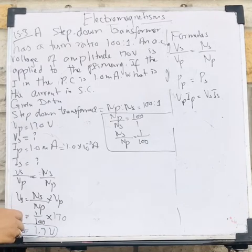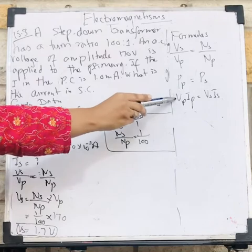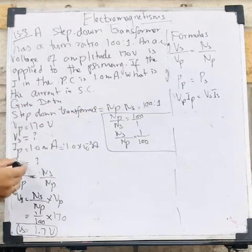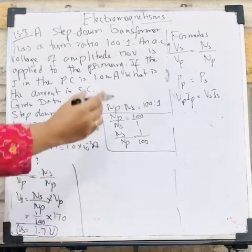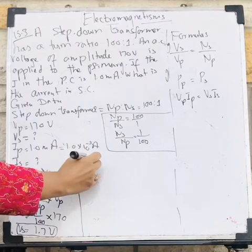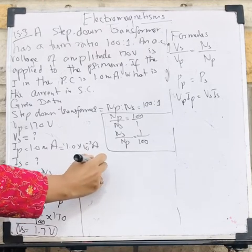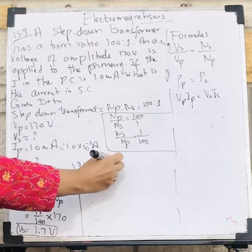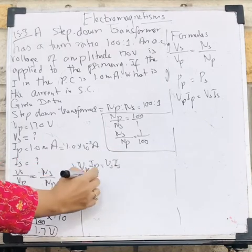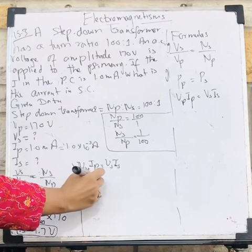Now the Vs is also known for me. If I can use the last formula for calculation of the Is, so let's use this formula. Vp Ip is equal to Vs Is. Arrange this expression for Is, so Is is equal to Vp Ip divided by Vs.